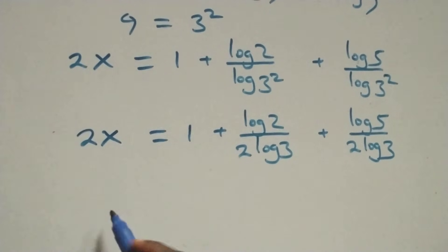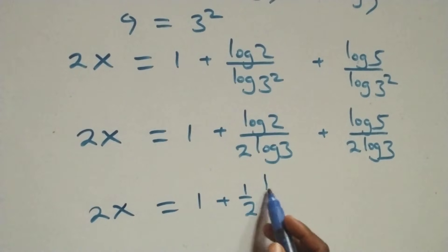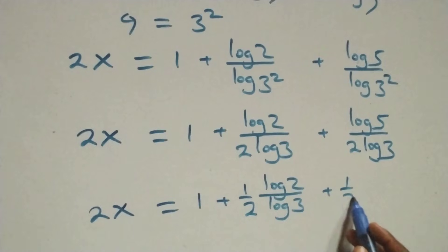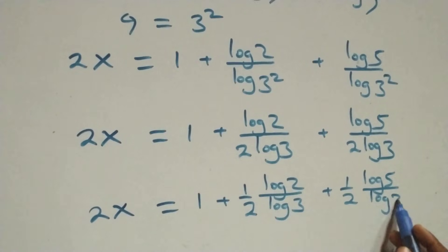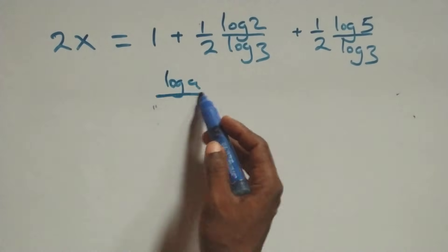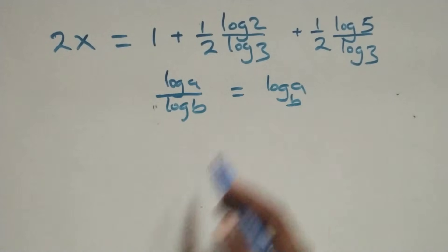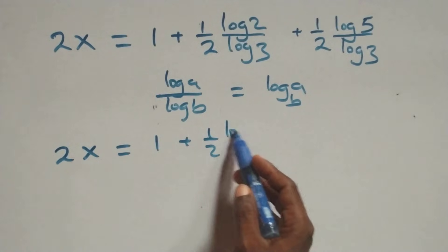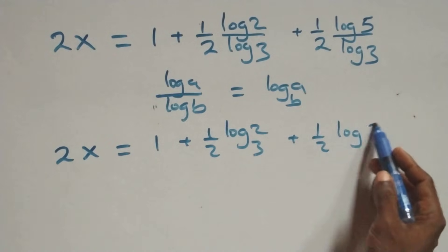This is the same as 2x equals 1 plus one-half times log 2 over log 3, plus one-half times log 5 over log 3. We apply the change of base formula: log a over log b is the same as log base b of a. So this becomes 2x equals 1 plus one-half times log base 3 of 2, plus one-half times log base 3 of 5.